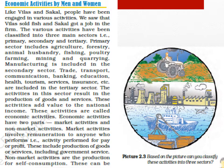These various activities have been classified into three main sectors: Primary, Secondary, and Tertiary. In the Primary Sector there is Agriculture, Forestry, Animal Husbandry, Fishing, Poultry Farming, Mining and Quarrying. These all come under the Primary Sector.